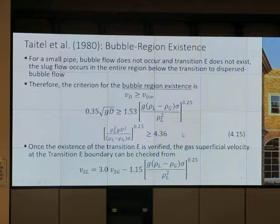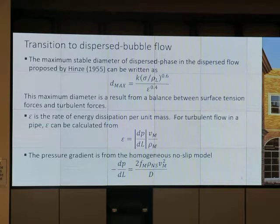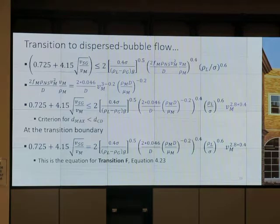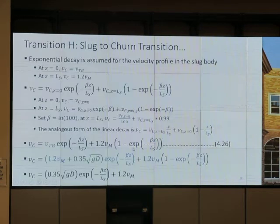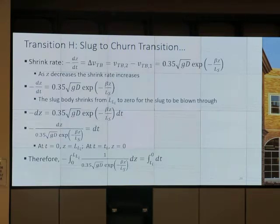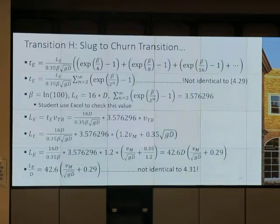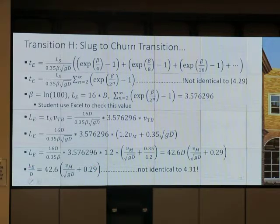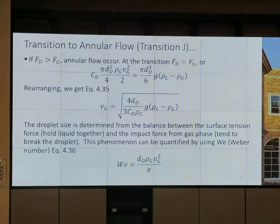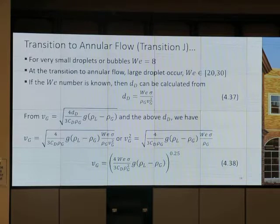It's not transition D. Let me talk about transition F. Recall the final form of transition F. Then transient G — we derived transient H for the case of vertical flow. At the end we get this equation, which is a little bit better than the book. And we talked about transient J and got the equation for transient J.